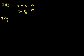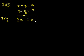Let's solve for x and y in terms of a and b, and then figure out what this equals. We have two equations with two unknowns. Let's add them together to solve for x. We get 2x, the y's cancel out, is equal to a plus b, or x equals a plus b over 2.